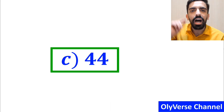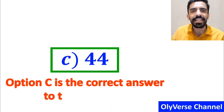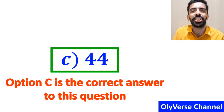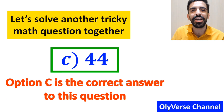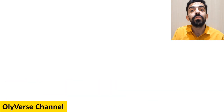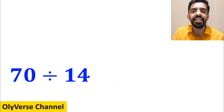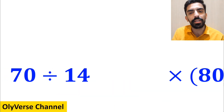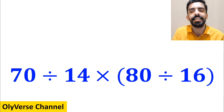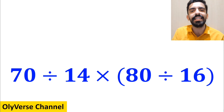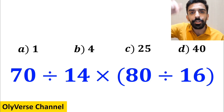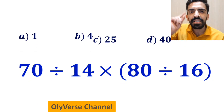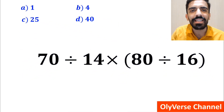Option C is the correct answer. Now let's solve another tricky math question together. What is the value of the expression 70 divided by 14 multiplied by (80 divided by 16)? Which option do you think is the correct answer?